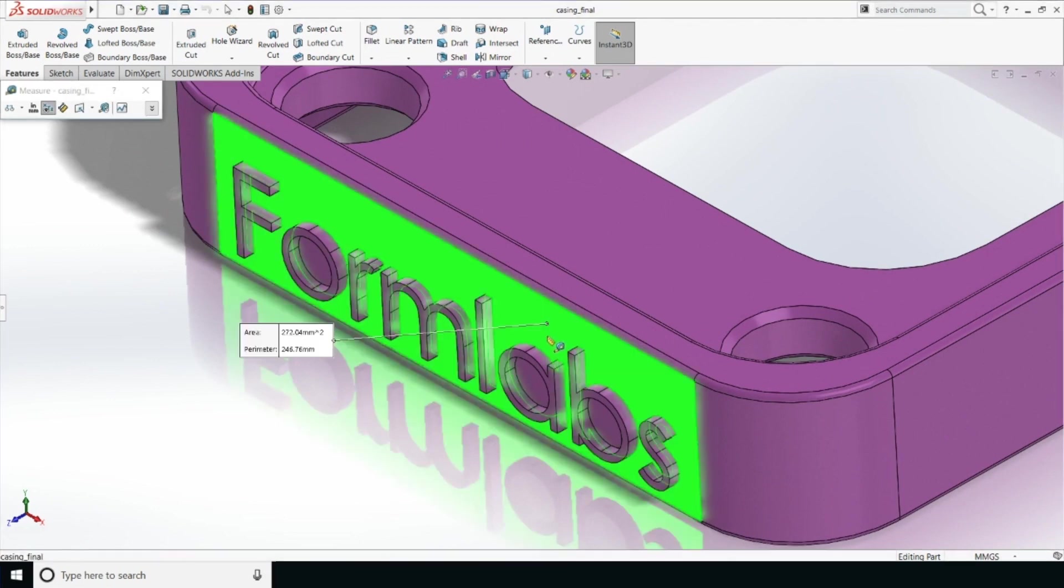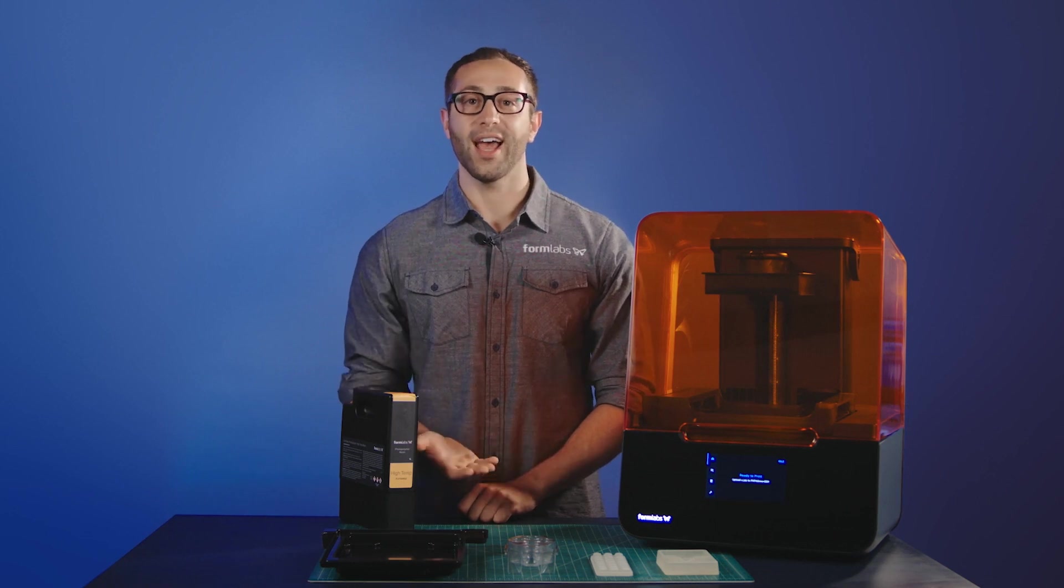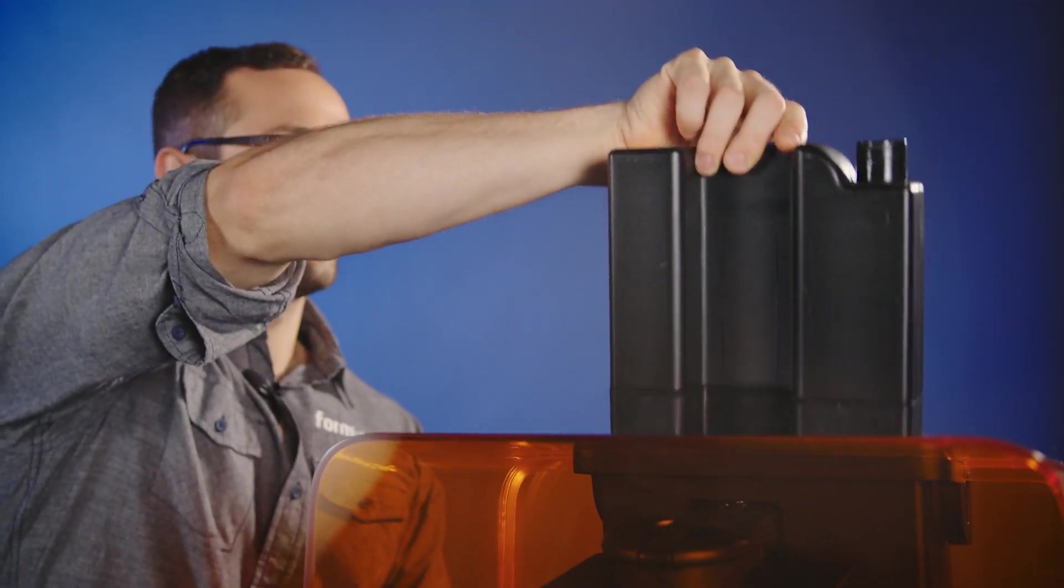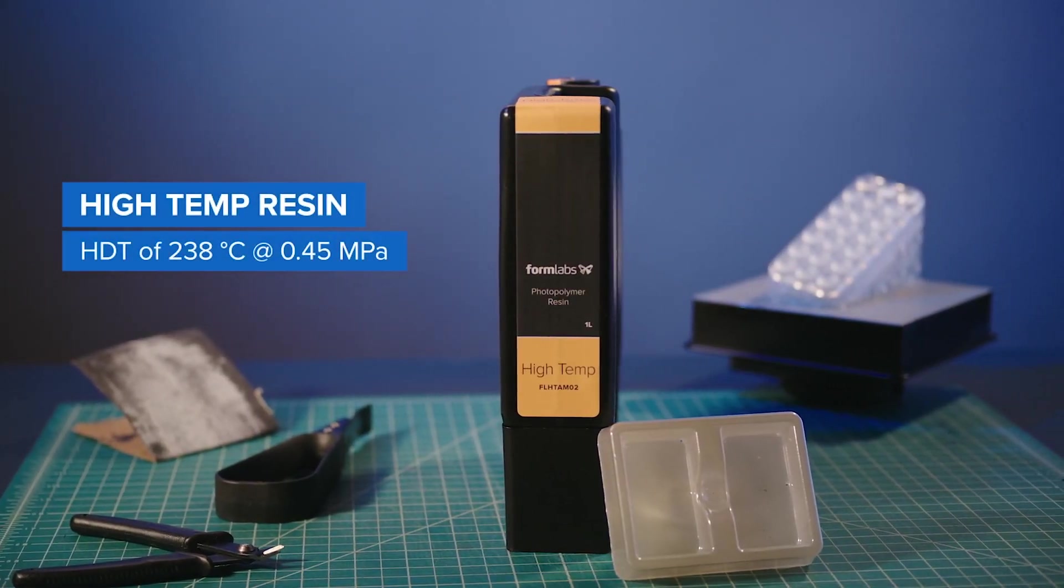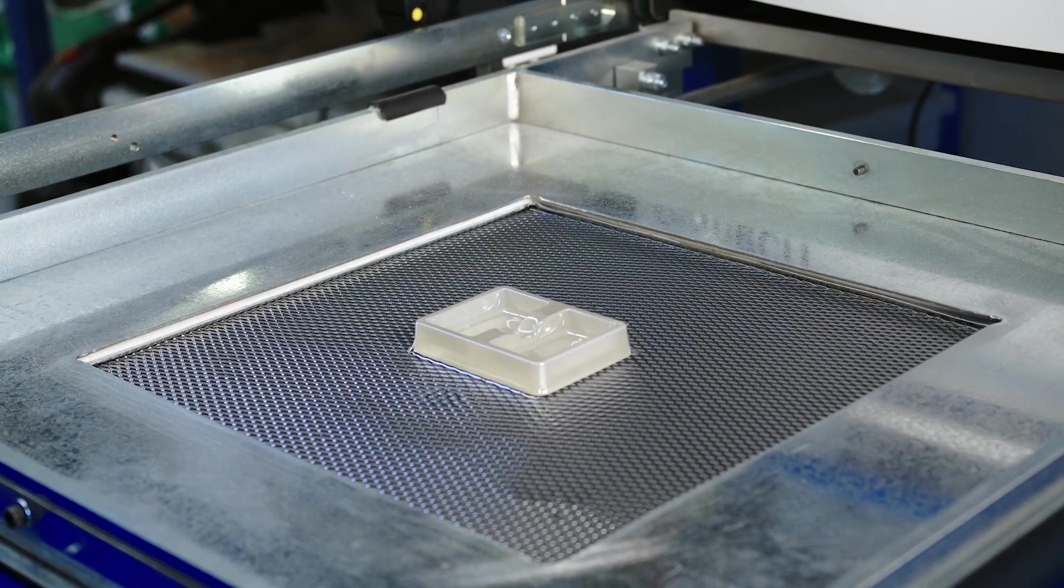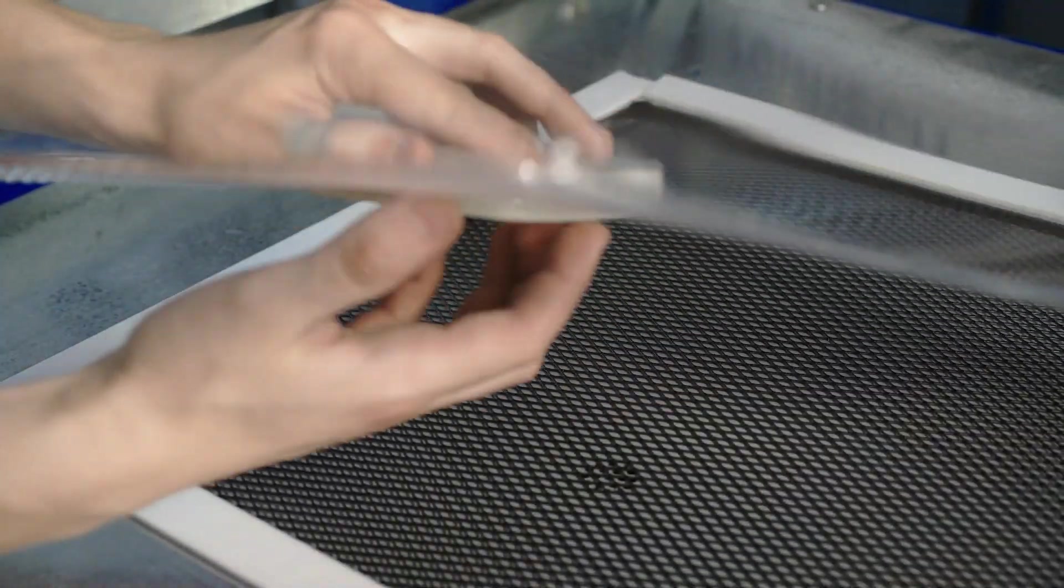In this case we're going to use the Formlabs Form 3 printer and High Temp resin to create some quick vacuum forming molds. Formlabs High Temp resin has an HDT, or heat deflection temperature, of 238 degrees Celsius—high enough to hold up to the elevated temperatures of vacuum forming thermoplastics like PETG and ABS.